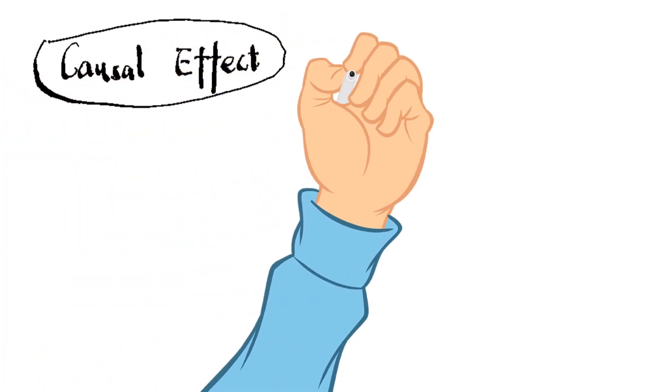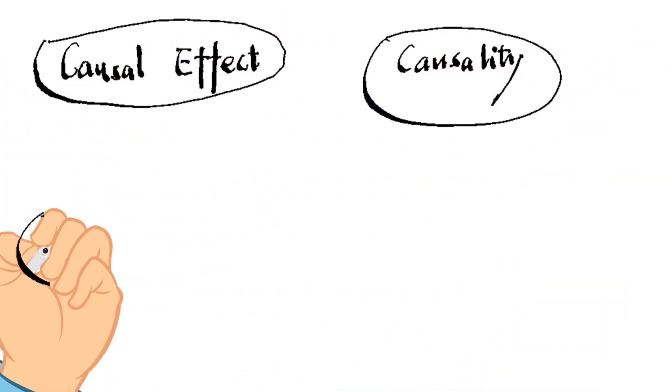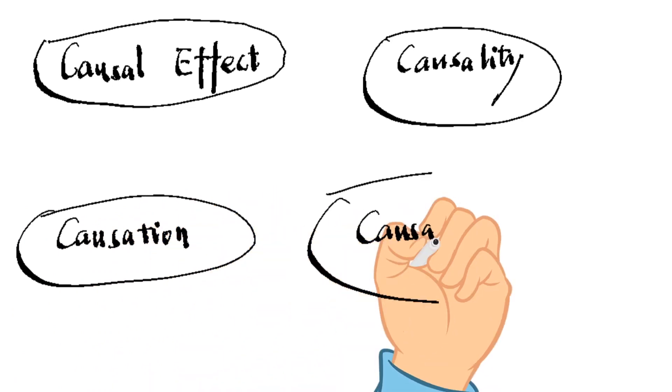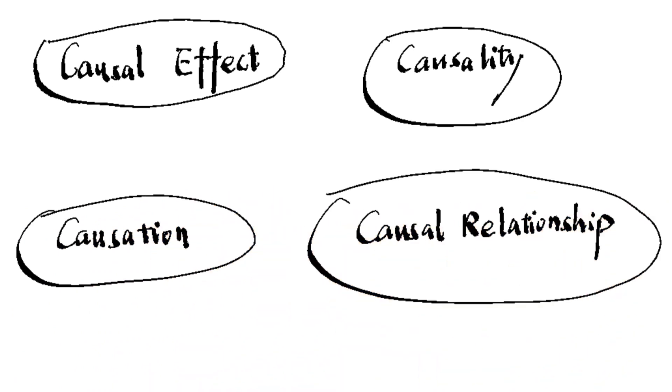The notions of causal effect, causality, causation, and causal relationship are interchangeable. They mean an explanatory variable causes the outcome to occur. According to Professor Stock and Watson's textbook, Introduction to Econometrics, causality means a specific action,